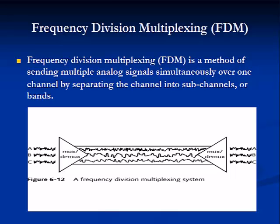Note that the device called a multiplexer, or simply MUX, multiplexes the data, and the demultiplexer, or demux, demultiplexes the data. There is a MUX and demux at both ends of the channels in this illustration, so the channel is full duplex communication — transmission back and forth simultaneously.